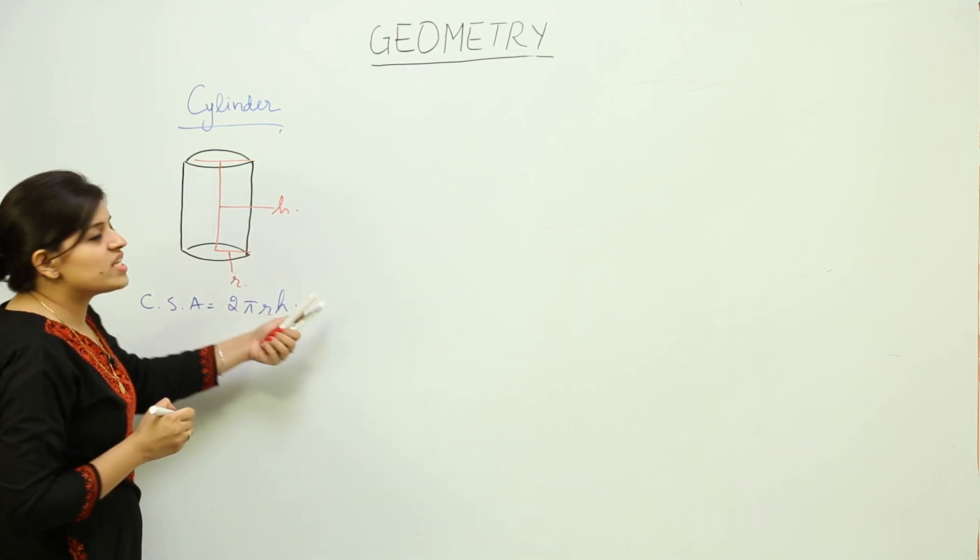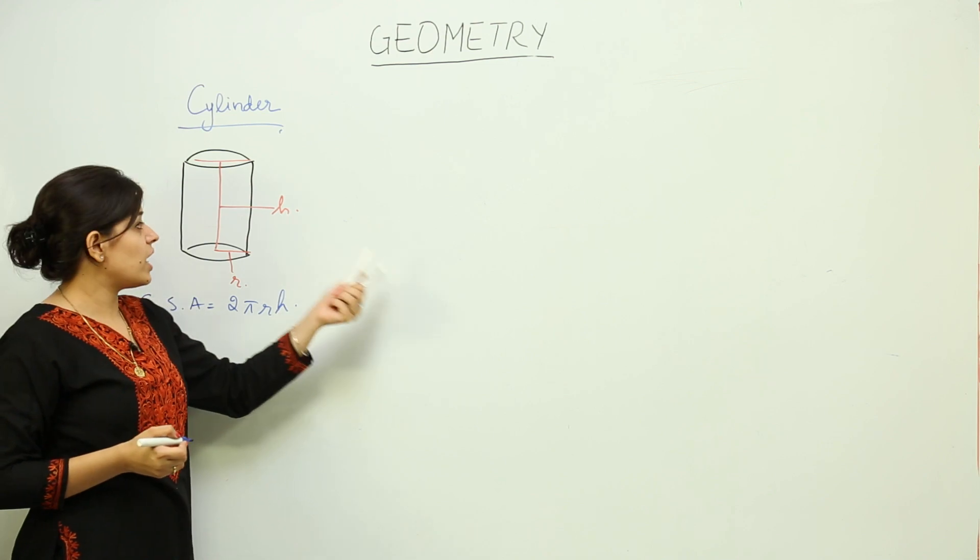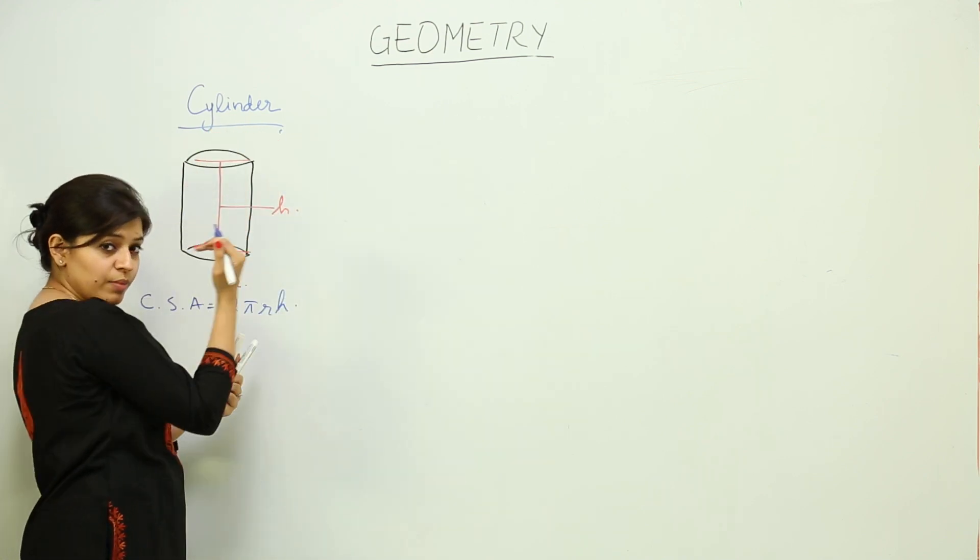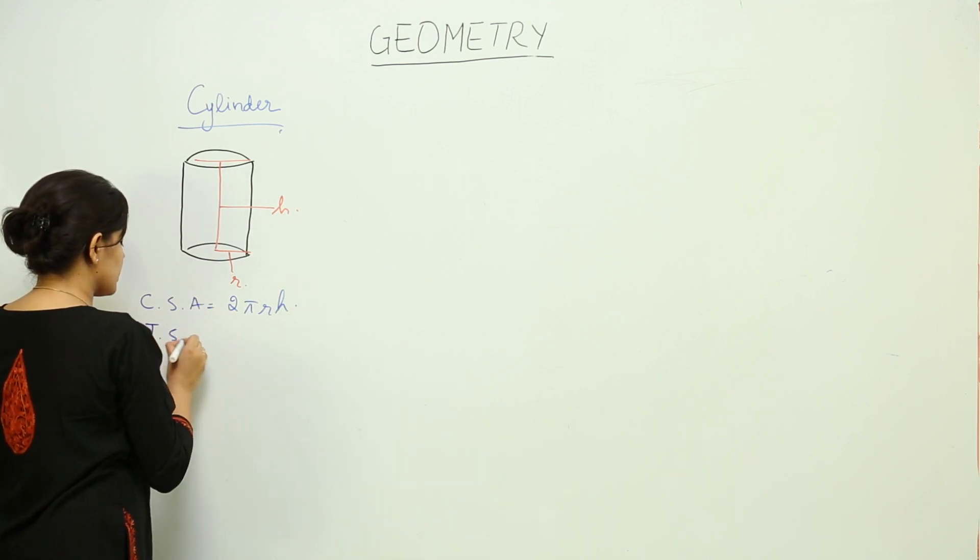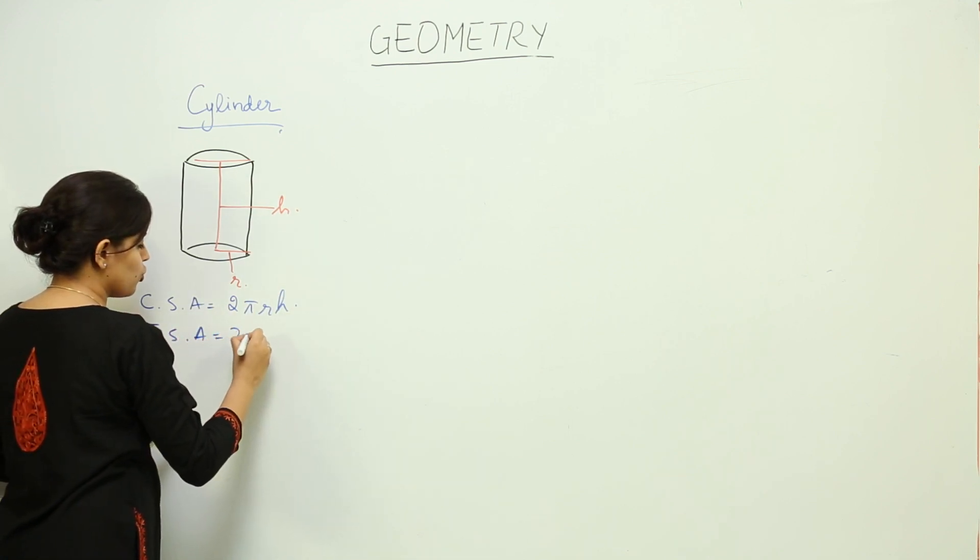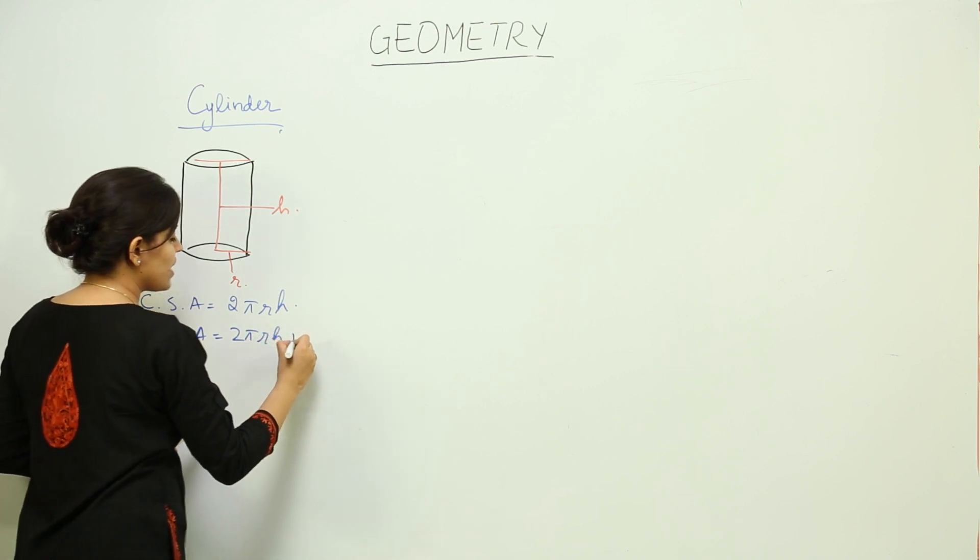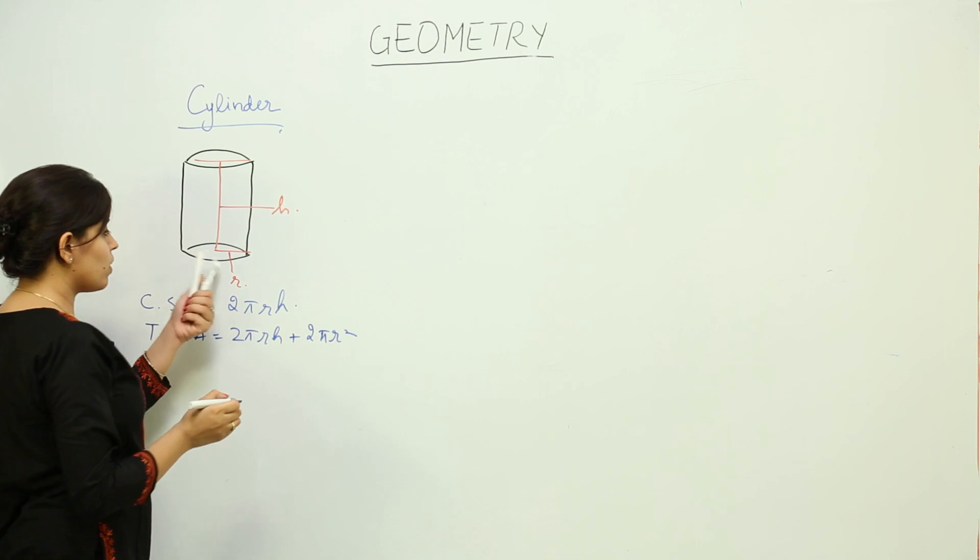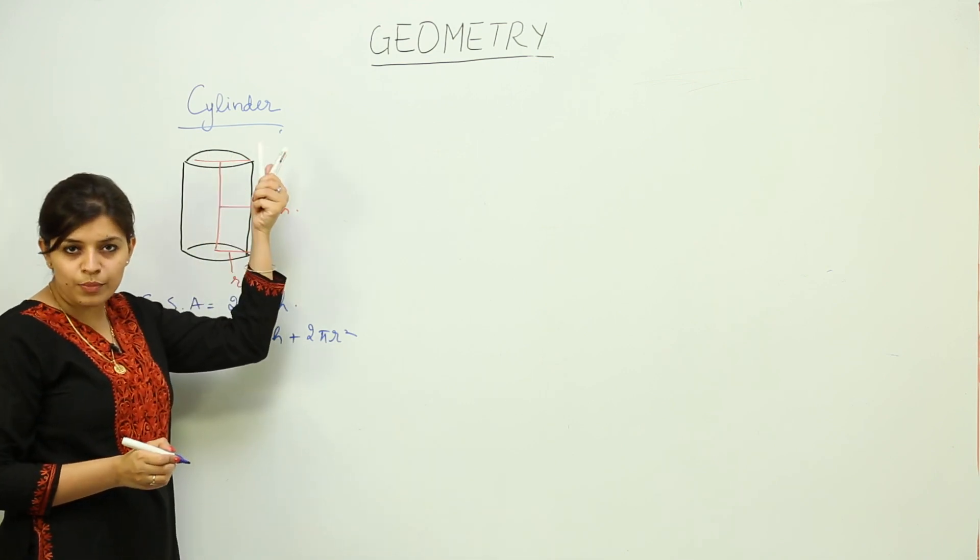Now, what is the total surface area? The total surface area includes this curved surface area plus above lid plus the lid below it. We can say that the total surface area is 2πrh plus 2πr². One πr² is the lower lid and the other πr² is the upper lid.